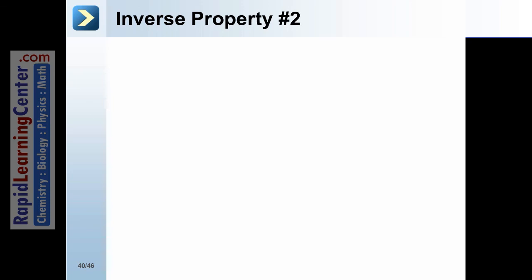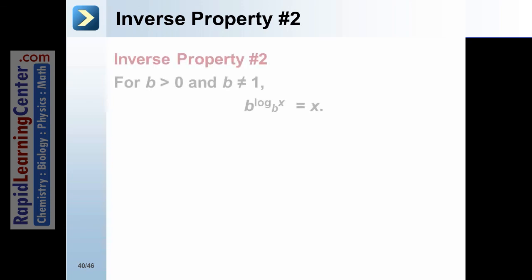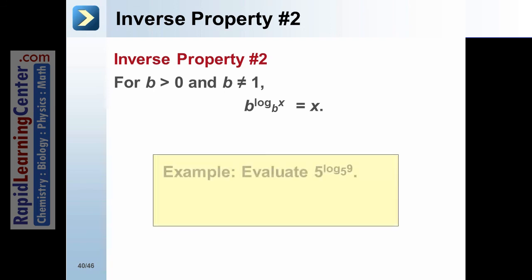Inverse Property Number 2: For b greater than 0 where b cannot equal 1, b to the log base b of x equals x. Example: Evaluate 5 to the log base 5 of 9 — 5 to the log base 5 of 9 equals 9.